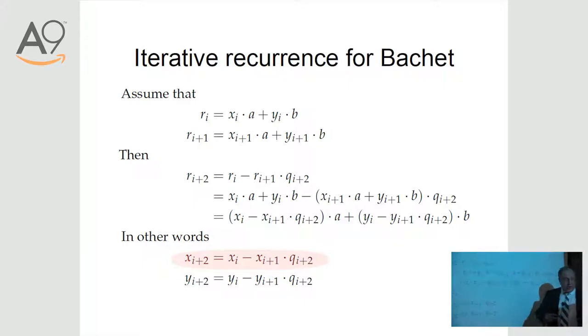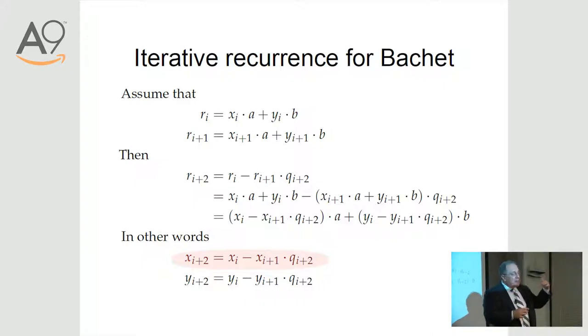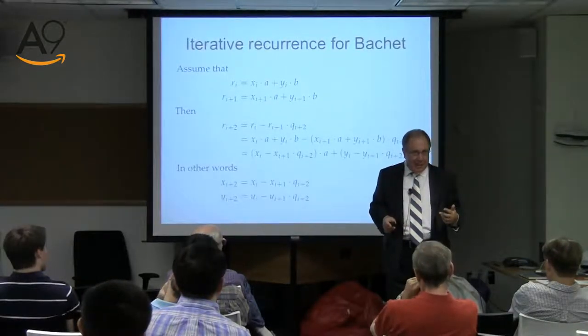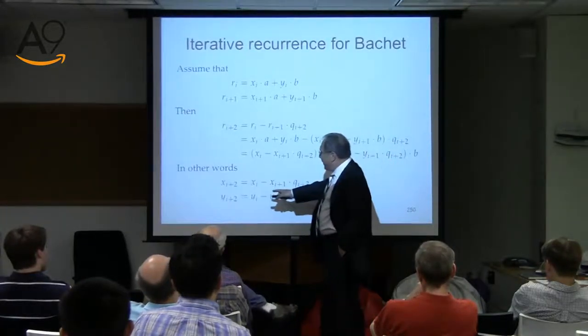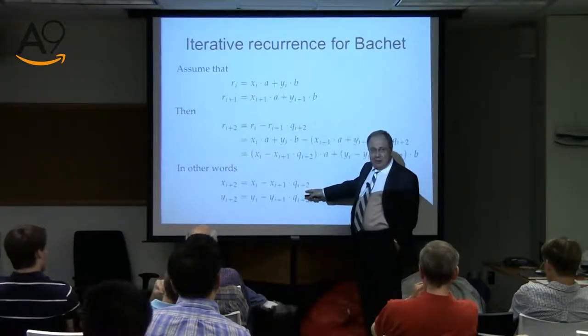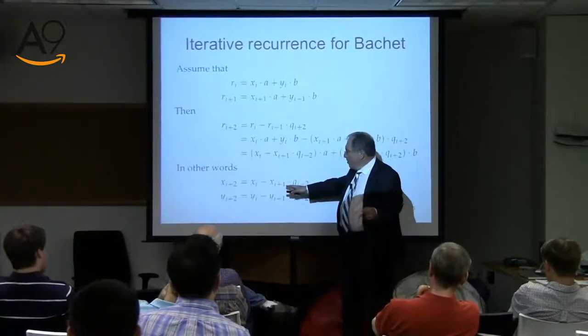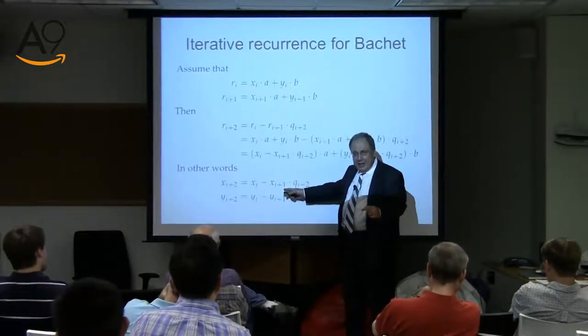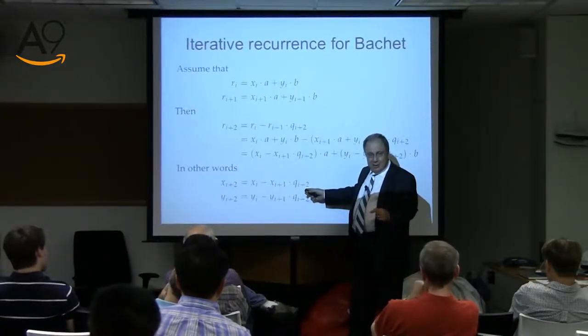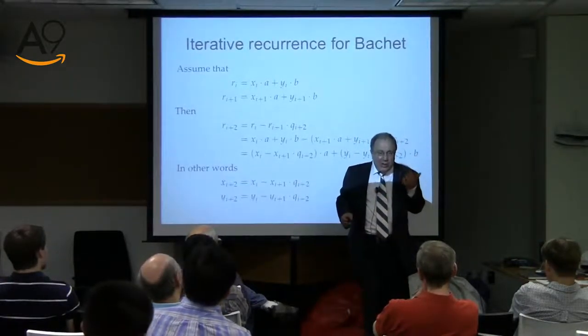We know that we start with one and zero — the first pair. Then we literally just use this. We need to keep two values around, and I'll call them X sub zero and X sub one, and they're going to slide down. When I compute the new one, I slide them down. The new one is X sub zero minus X sub one times the quotient.